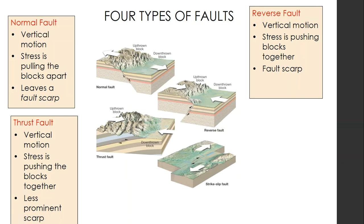The next type is a thrust fault. Again, vertical motion — stress from the blocks pushing together, but they push apart in this direction as opposed to the other. You still get that up-thrown block and down-thrown block, and you still get that fault scarp, but it is going to be much less prominent than the fault scarp from a normal or reverse fault.